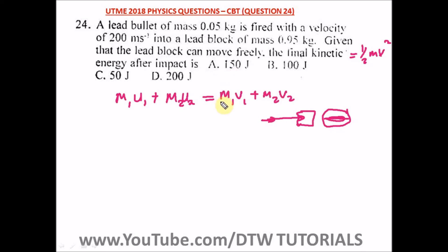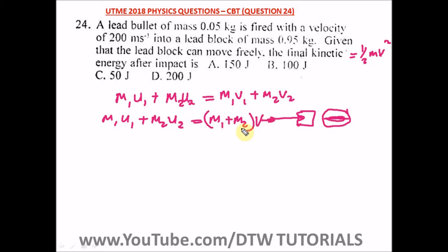Since this is an inelastic collision, the formula becomes: m1×u1 + m2×u2 = (m1 + m2)×v, because both objects move together with the same final velocity v. In an elastic collision the final velocities are different, but here the bullet and block move together, so there is just one final velocity.